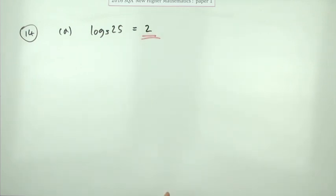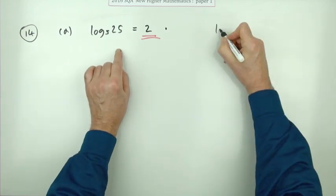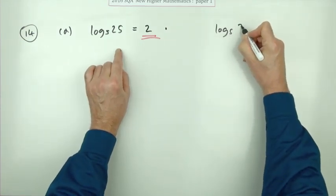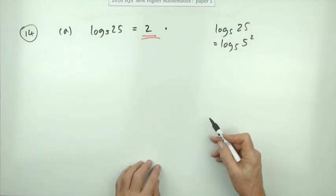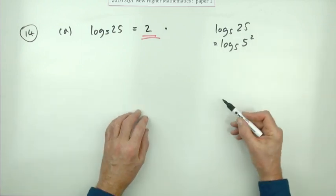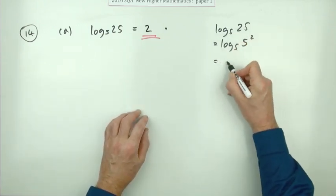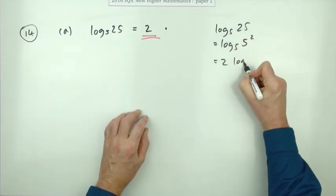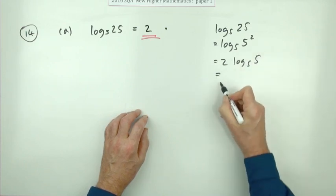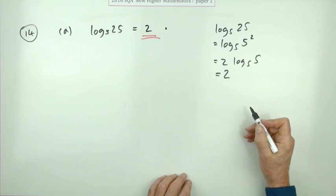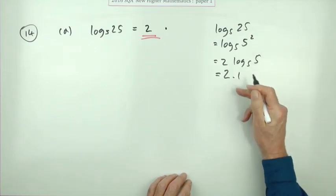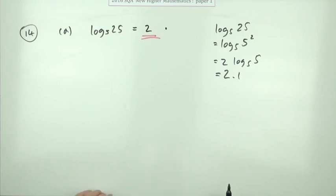There's no need to go through the routine of log₅ of 25 is log₅ of 5 squared, then bringing that 2 to the front so it's 2 times log base 5 of 5, and then saying what's log₅ of 5—that's 1. By the time you've done that, you already knew the answer.